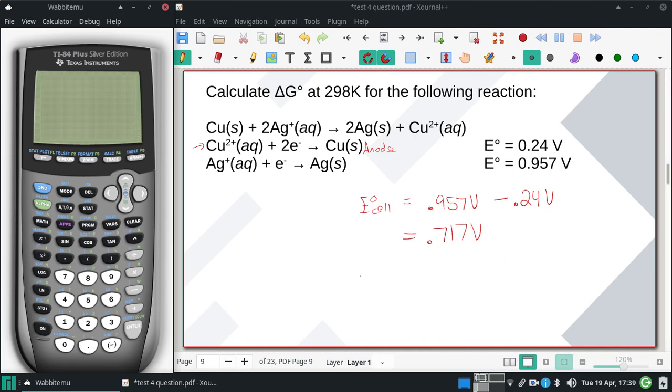All right, to get a delta G, we use that equation. Delta G equals negative nFE°.